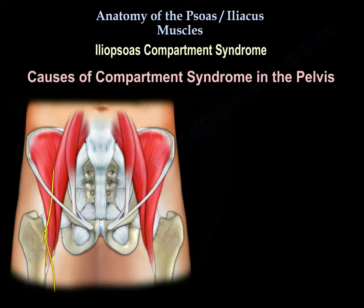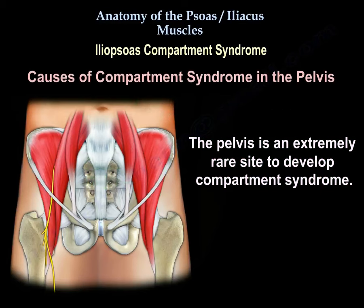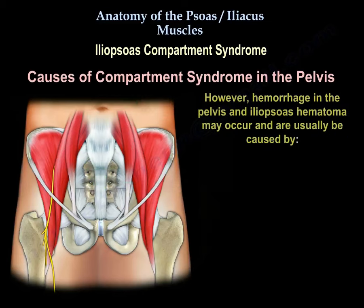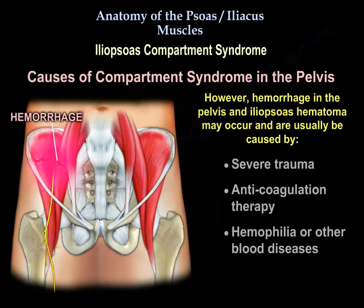Causes of compartment syndrome in the pelvis: the pelvis is an extremely rare site to develop compartment syndrome. However, hemorrhage in the pelvis and iliopsoas hematoma may occur, and are usually caused by severe trauma, anticoagulation therapy, hemophilia, or other blood diseases.